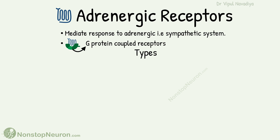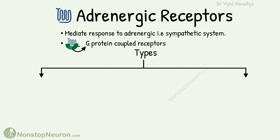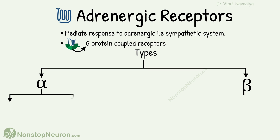Now let's talk about the types of adrenergic receptors. Broadly, the receptors are categorized into alpha-adrenergic receptors and beta-adrenergic receptors. There are two subtypes of alpha-adrenergic receptors: alpha-1 and alpha-2.